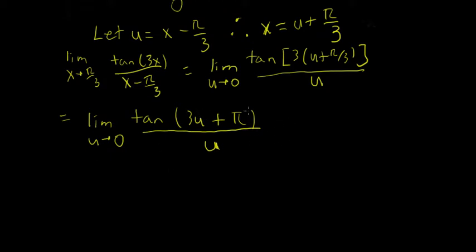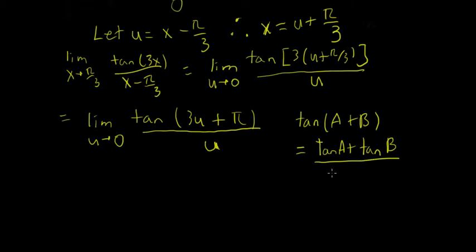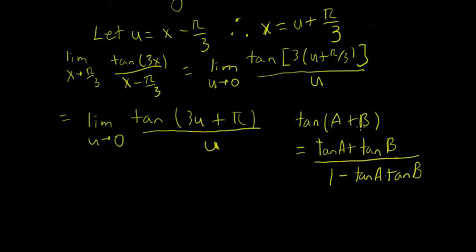Hopefully you remember from your trig identities that the tangent of (a plus b) equals the tangent of a plus the tangent of b, all divided by 1 minus tangent of a times tangent of b. This is the angle sum identity for tangent, which can be derived from the angle sum identities for sine and cosine. We'll take it for granted here.